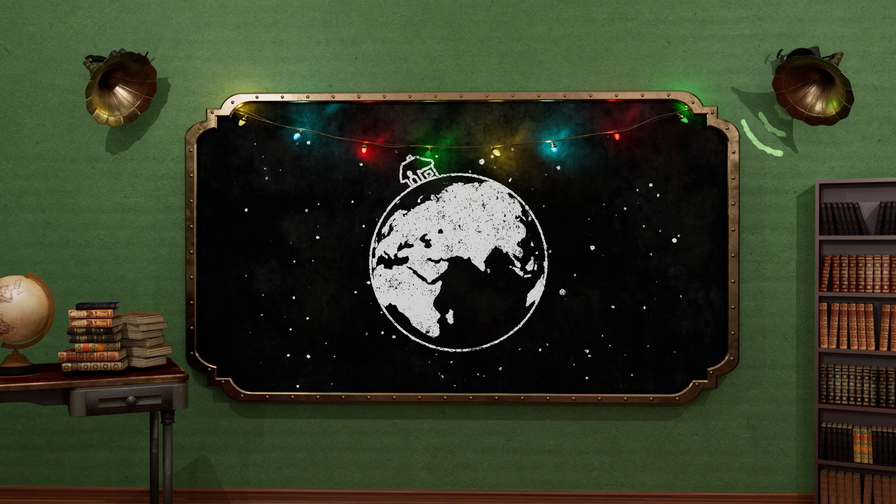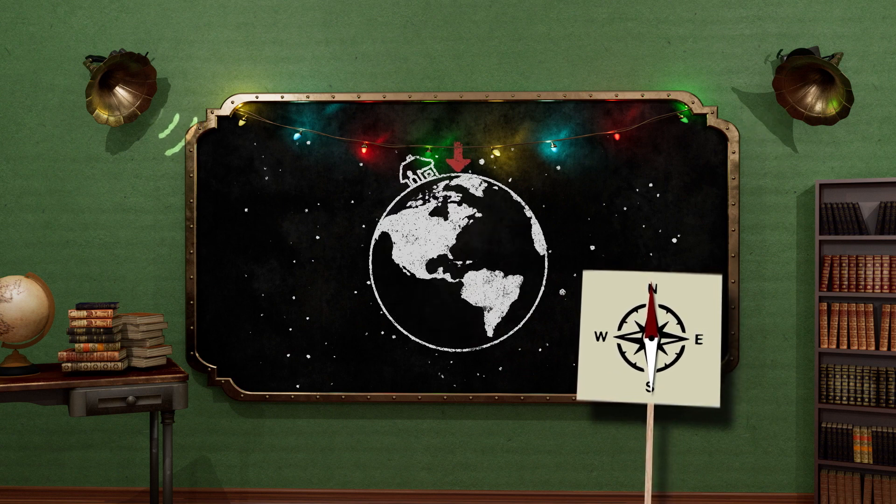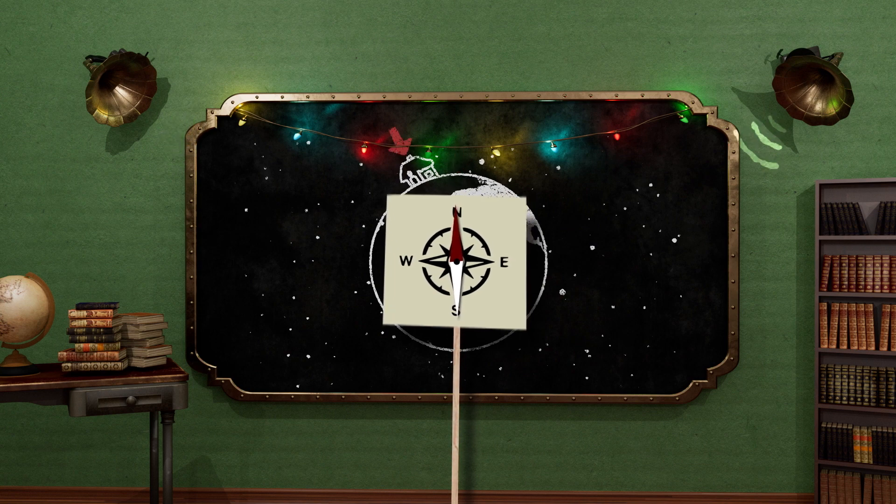But if you grabbed a compass and headed north to find us, it might be trickier than you think. That's right! A compass will lead you to magnetic north. But magnetic north can be more than 1,000 miles away from true north.